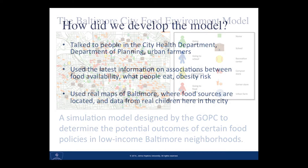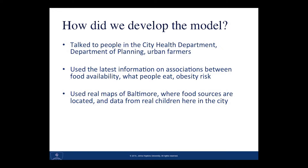How did we develop this particular model? This involved a multi-stage process that included talking to people at the City Health Department and the Department of Planning. We talked to urban farmers and community members in the City of Baltimore. We also used the latest scientific information on associations between food availability, what people eat, and their risk for obesity. We used real maps of Baltimore City, information about where different food sources are located, and actual data from real children here in the City of Baltimore.